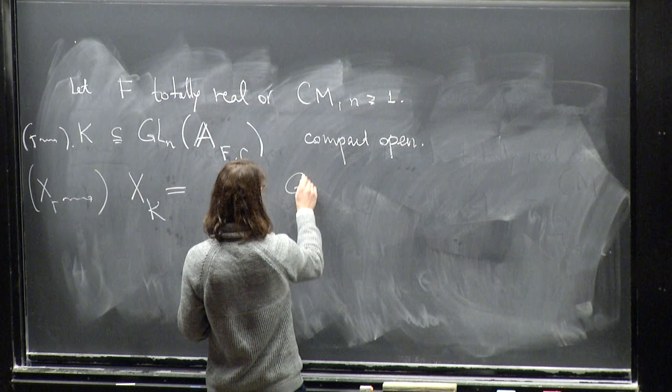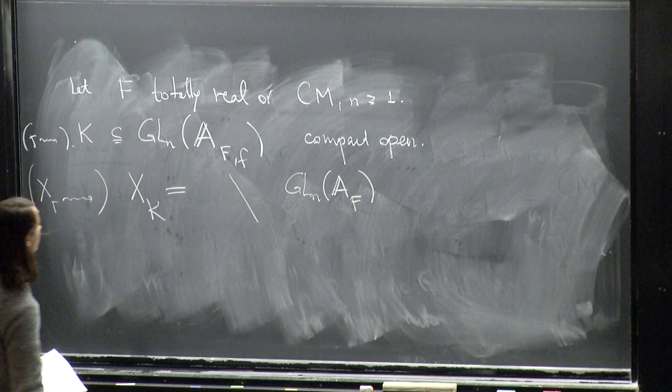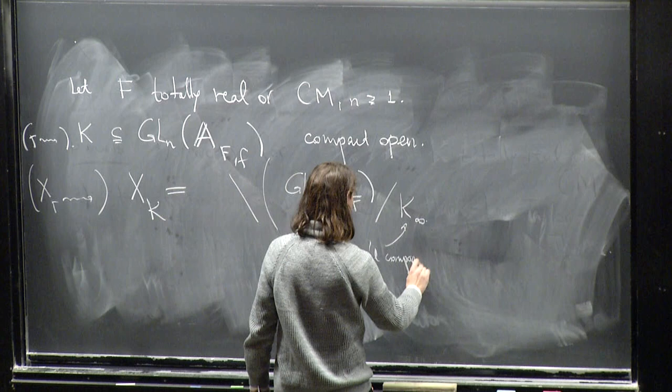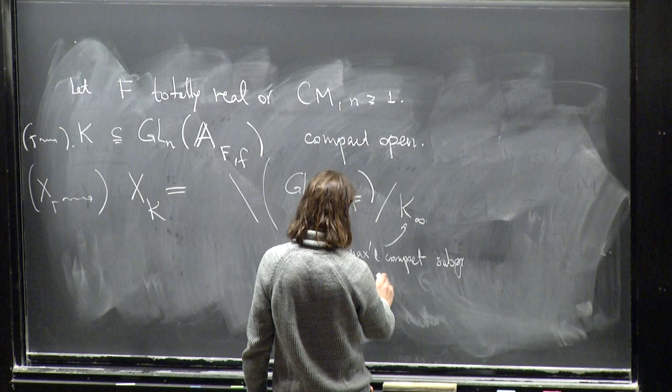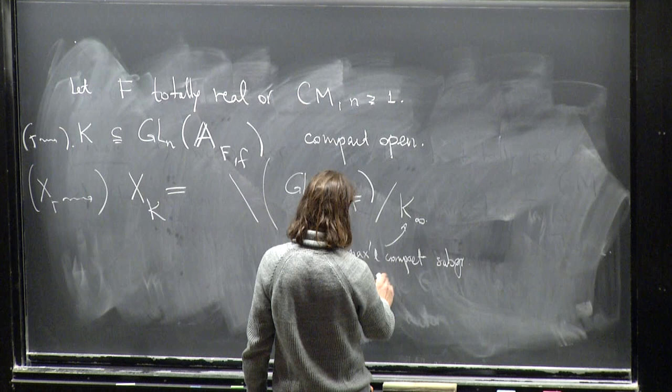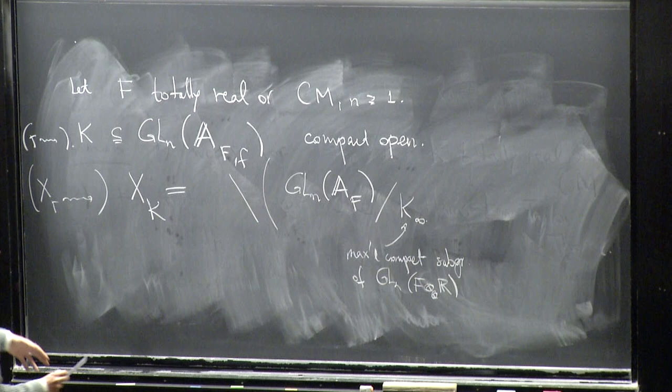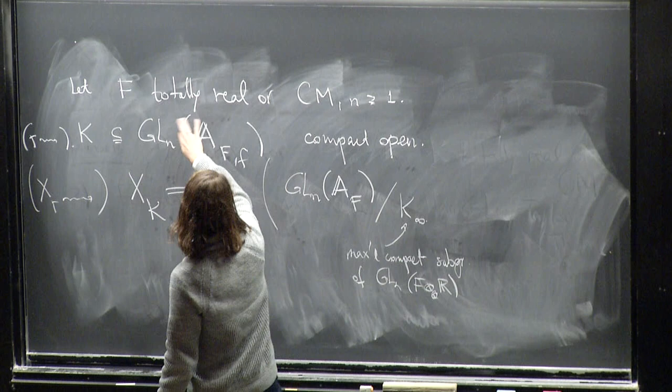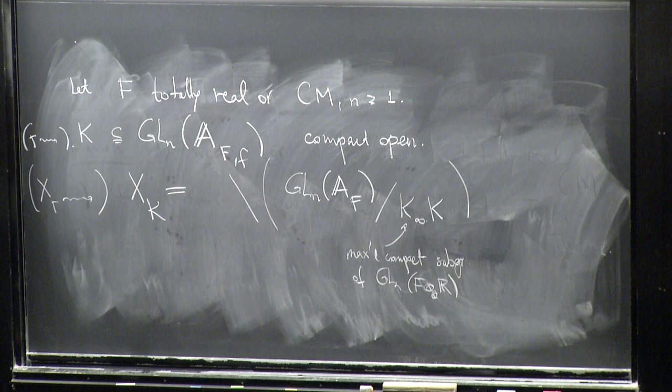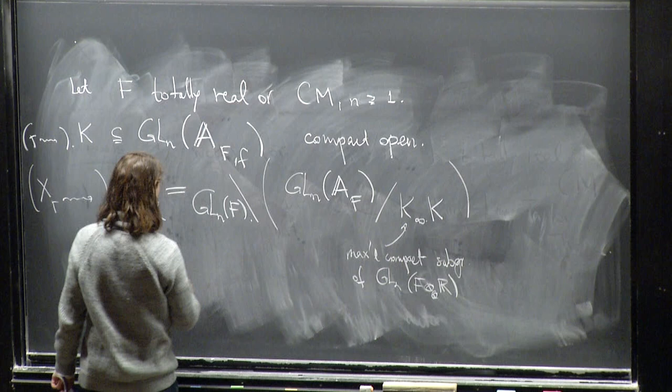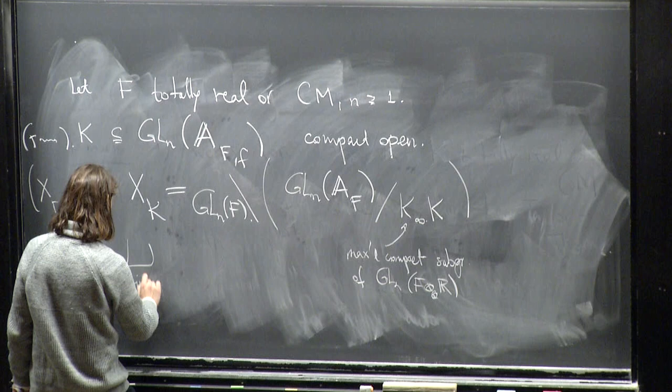What used to be called x gamma becomes x k. You're taking GLn of the ideals of this field f. On one hand, you're dividing by k infinity, the maximal compact subgroup of the real part. Then this part is some totally disconnected thing. And here I divide by GLn of f. So this is really just a finite disjoint union of some symmetric space by some congruent subgroup.